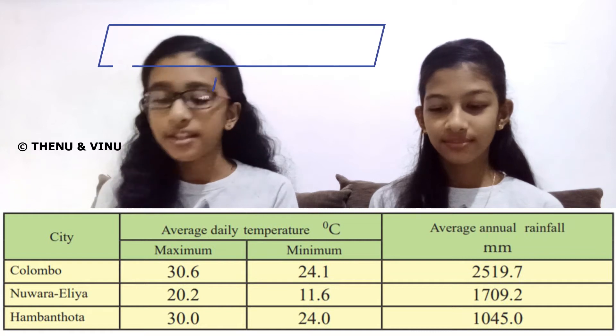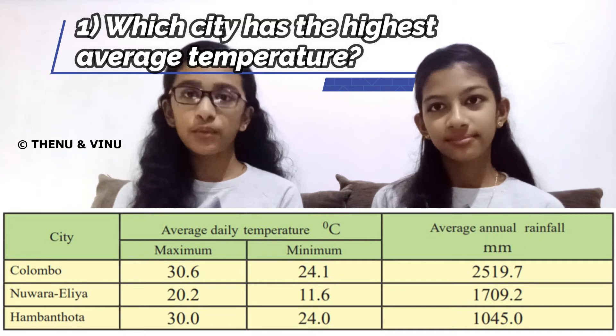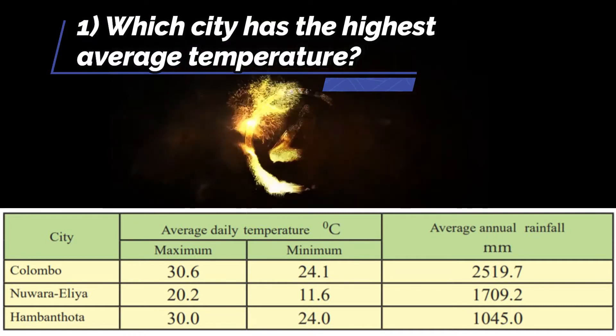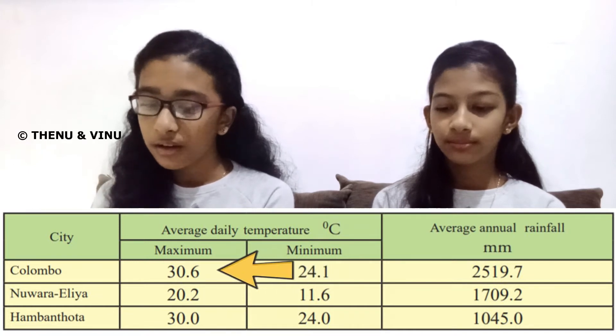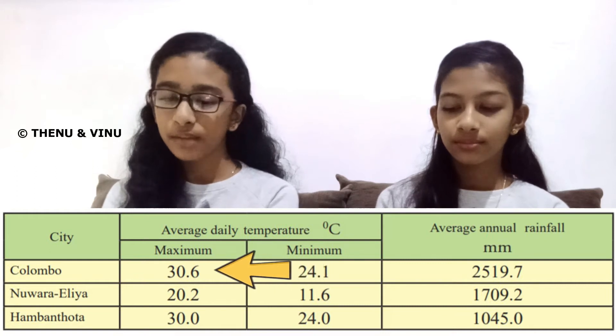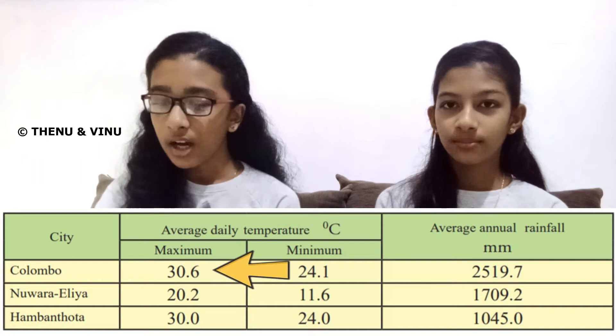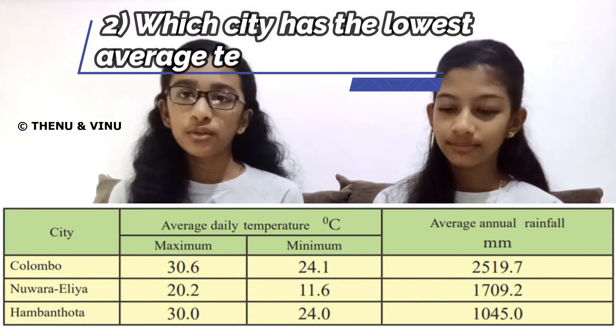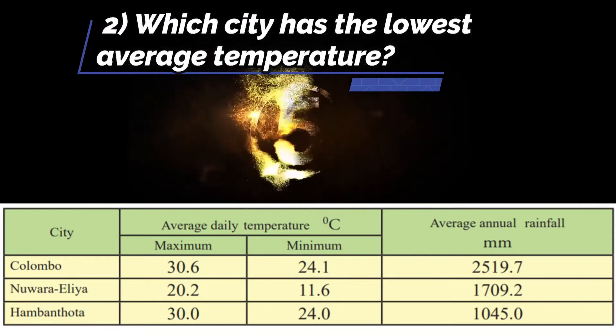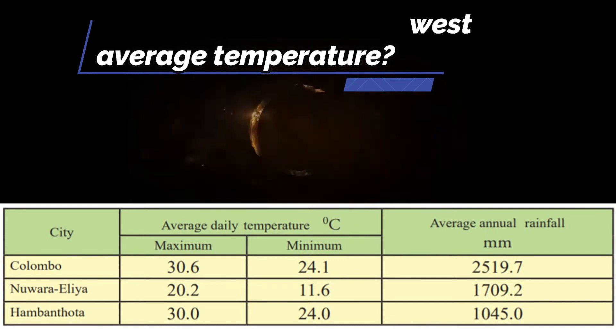The first question is: which city has the highest average temperature? You can answer within five seconds. The answer is Colombo. Because in the average daily temperature column — looking at the maximum — you can see Colombo has 30.6 degrees Celsius. The second question is: which city has the lowest average temperature? The answer is Nuwara Eliya.